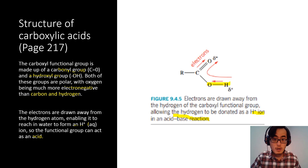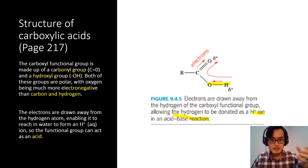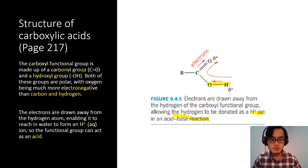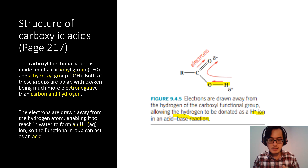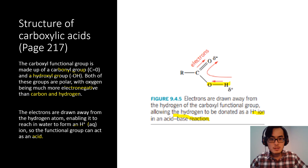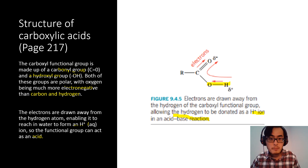Carboxylic acids can act as acids because they release hydrogen ions. We know from acid-base chemistry that a substance is an acid if it releases hydrogen ion, and a base if it releases hydroxide ion. Carboxylic acids are weak acids because they don't dissolve completely in water — they only partially ionize. The hydrogen of the carboxyl group is donated as H⁺ in an acid-base reaction.